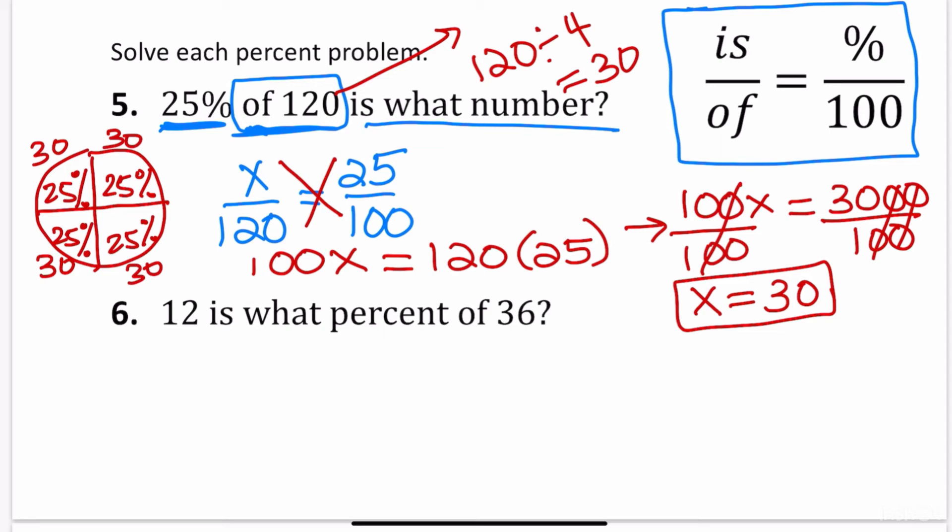So let's go on to question number 6. 12 is what percent of 36? 12 is what percent of 36? So let's go ahead and focus on the golden rule of percent, which is is over of equals percent over 100. 12 is what percent of 36? So 12 is, so the is is 12. What percent? That means I'm looking for the percent. I don't know the percent. It's percent over 100 of 36. So the of is 36. So now I cross multiply and I get 1200, 1200 equals 36x.